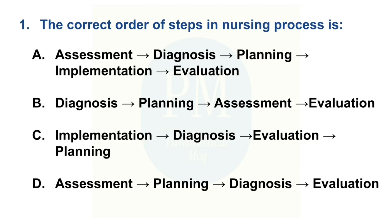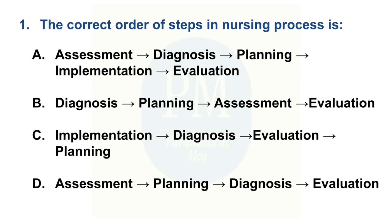The first question: The correct order of steps in the nursing process is — Option A: assessment, diagnosis, planning, implementation, evaluation. Option B: diagnosis, planning, assessment, evaluation. Option C: implementation, diagnosis, evaluation, planning. Option D: assessment, planning, diagnosis, evaluation. The correct option is Option A: assessment, diagnosis, planning, implementation, evaluation.